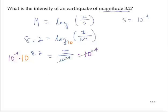And so I'm left with i is equal to, now notice that I'm multiplying numbers with the same base. So I will add the exponents. So that's 10 to the negative 4 plus 8.2. And so i equals 10 to the 4.2 power.